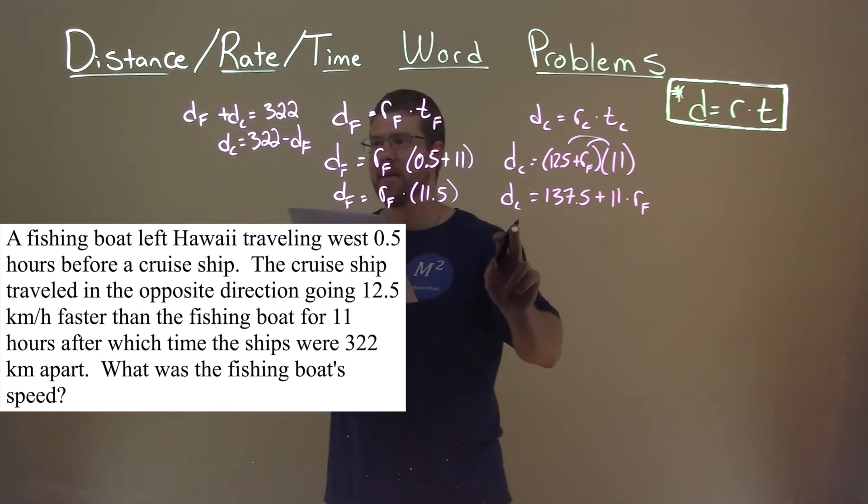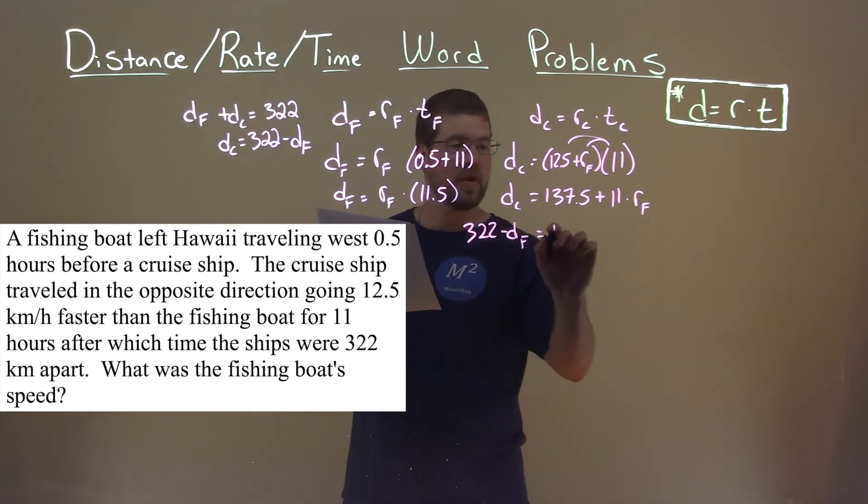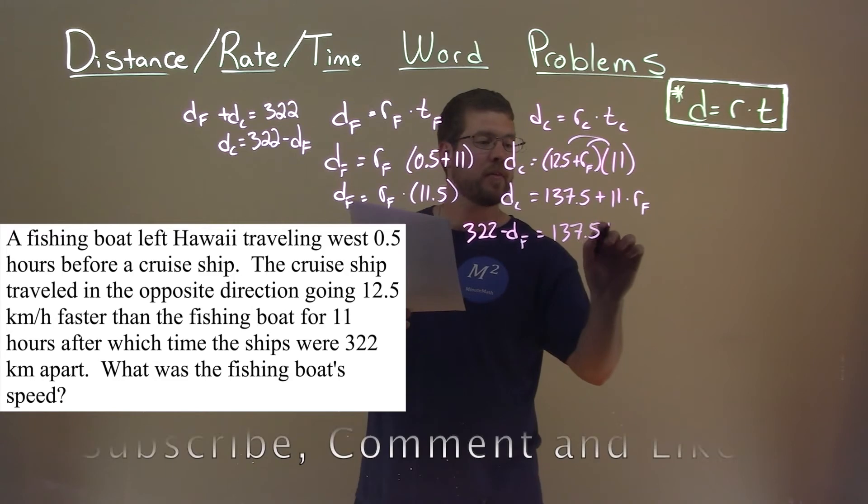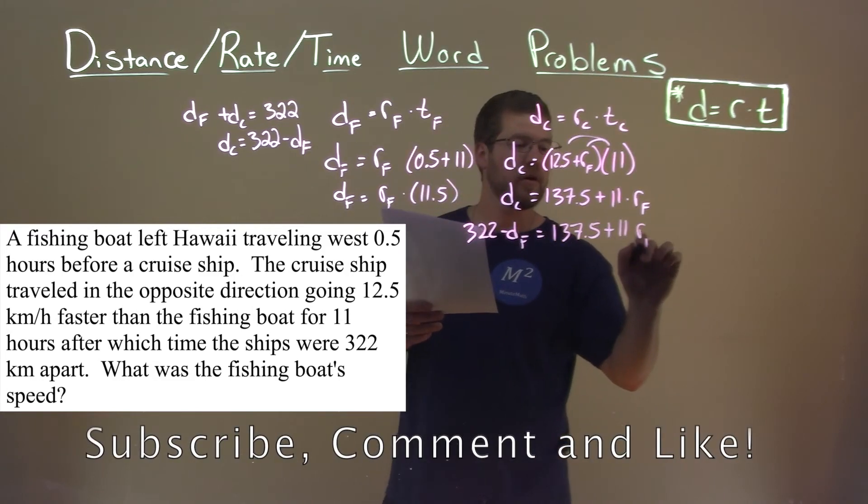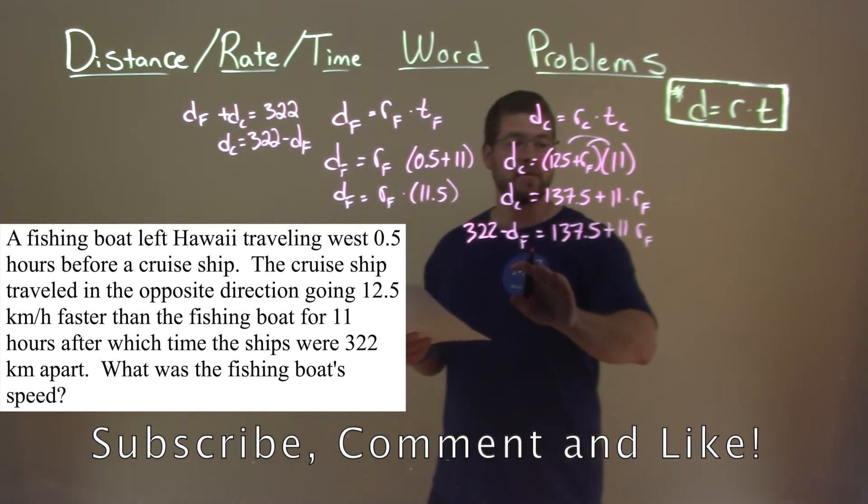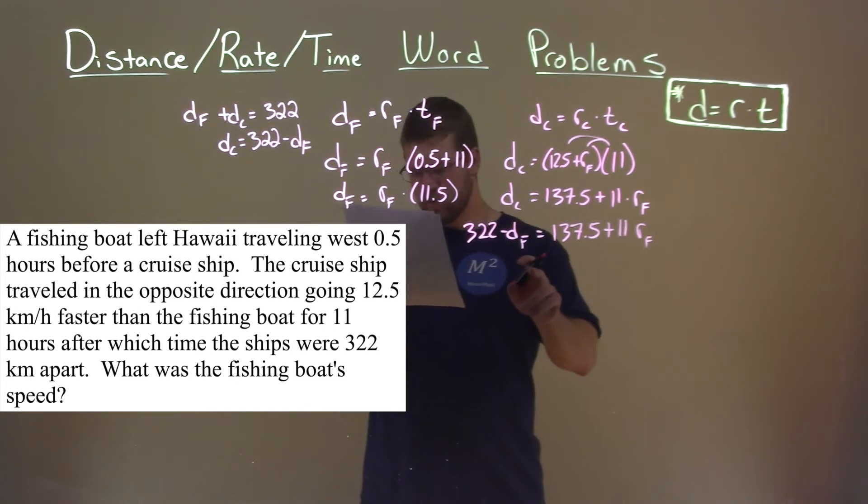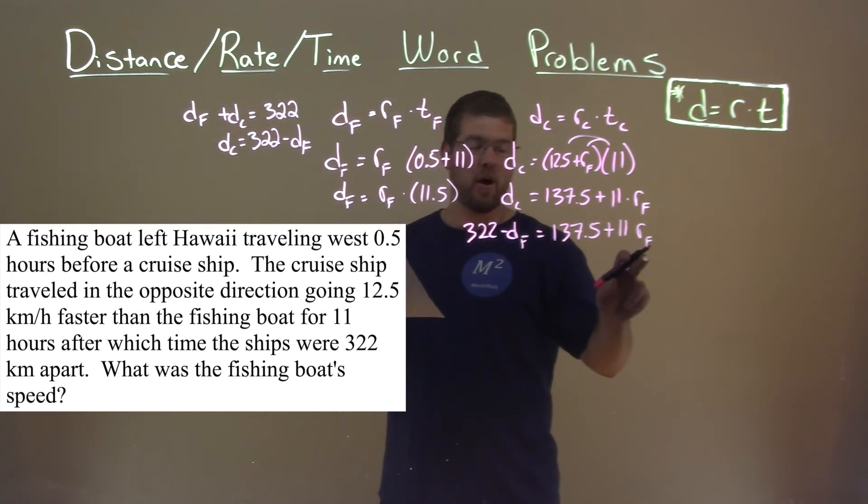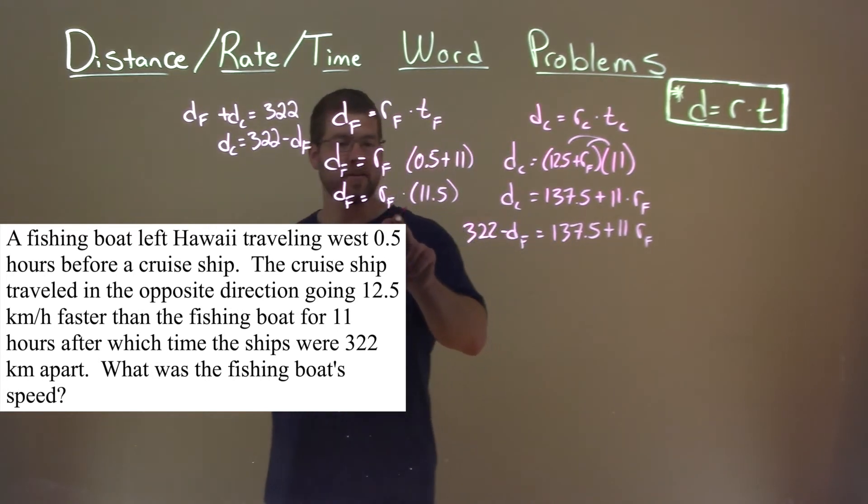So I can replace that here. Instead of D sub C, I'm going to write 322 minus D sub F is equal to 137.5 plus 11 times R sub F. So now we have an equation with almost one variable. We have two variables, D sub F and R of F. But D sub F, we can write here. This whole thing, we can put in for that D sub F now.